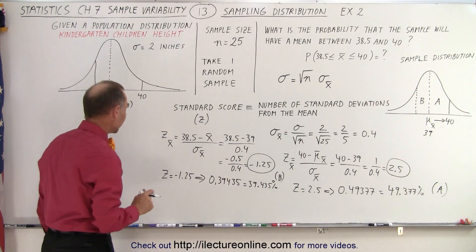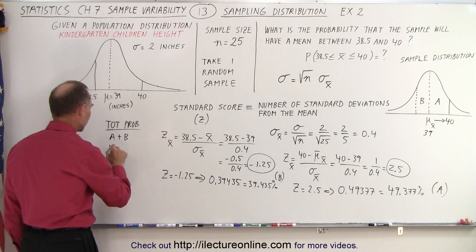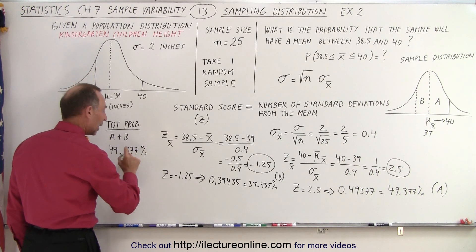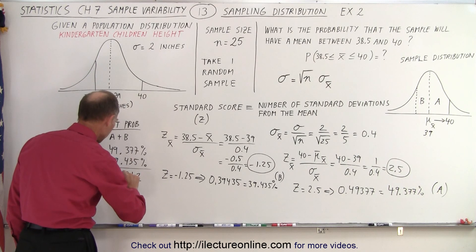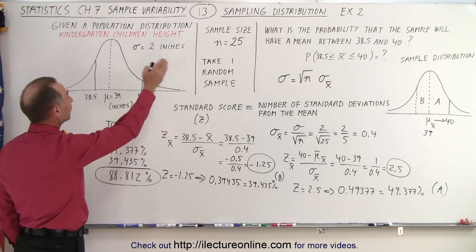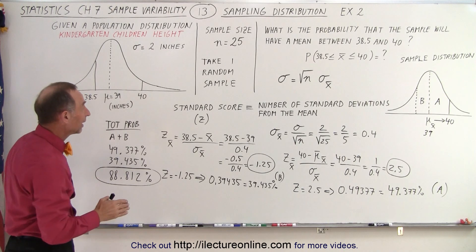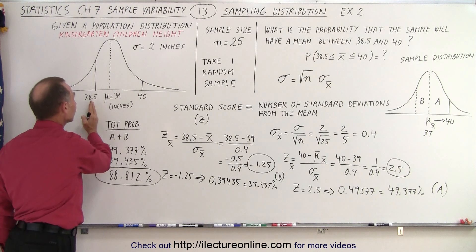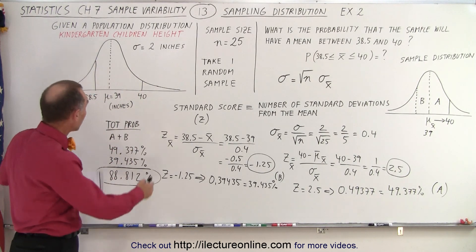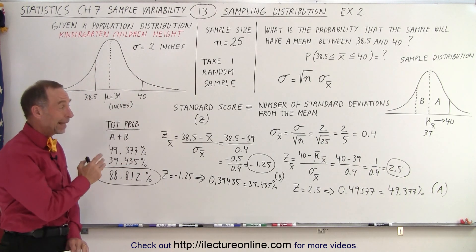For the total probability, we simply add A plus B: 49.377 plus 39.435 equals 88.812%. So there is an 88.812% probability that if we take a sample of 25 kindergarten children and measure their heights, the average of that sample will fall between 38.5 and 40 inches — that's almost 9 out of 10 samples falling in that range, given a population mean of 39 inches and a standard deviation of 2 inches.